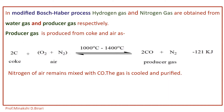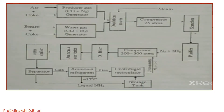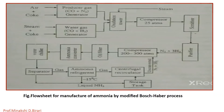Let us see the process of manufacturing in detail using the flow sheet for manufacture of ammonia by modified Bosch-Haber process. Water gas (from coke and steam: C + H2O → CO + H2) and producer gas (from coke and air: CO + N2) are mixed together in the oxidation tower such that carbon monoxide is removed and the proportion of N2 and H2 remaining is 1:3 by volume.